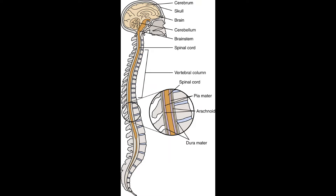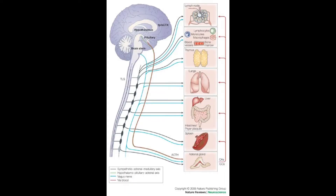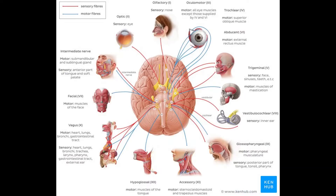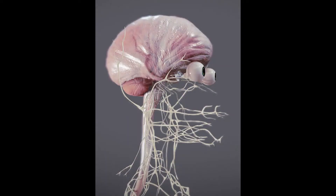Before we dive into the Central Nervous System, I want to talk about the general overview of the nervous system. There is so much going on with the nervous system that we are actually going to cover it for two weeks. This week will be a general overview and the Central Nervous System, and next week will be the Peripheral Nervous System.